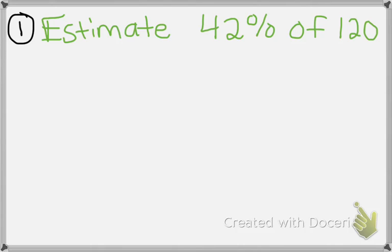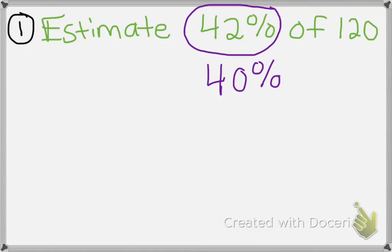So in this example, which is Estimate 42% of 120, we're going to take this and say, okay, well, you know what? 42%, I think we can round that off to 40%. So instead of 42%, we'll use 40%. So now it's Estimate 40% of 120.